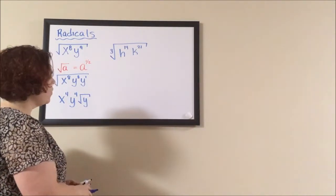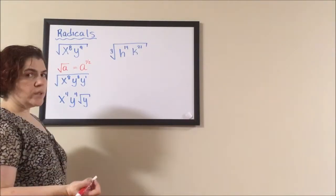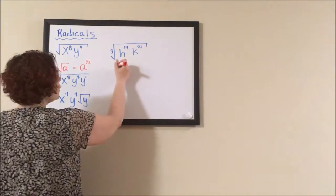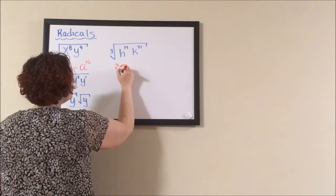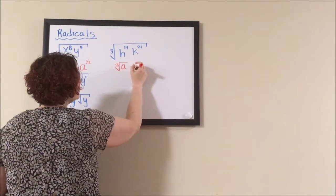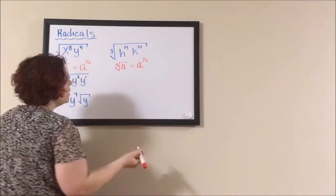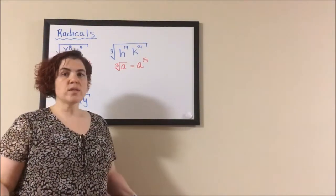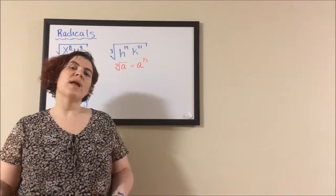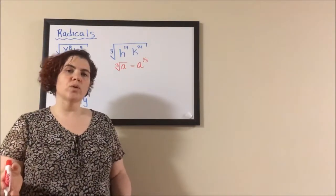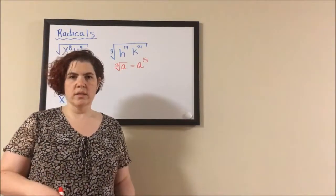For the next example where we have the cube root, if you didn't know, the cube root of a number is the same as that number to the power of one over three, which lets you figure out all the rest of the radicals. Whatever radical you have is the same as that number to the one over that number.